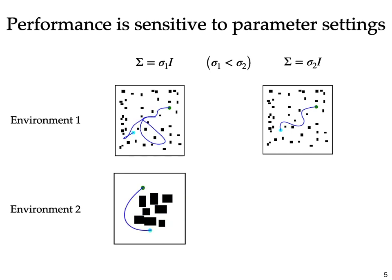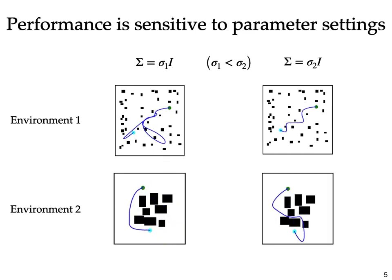But what happens if the obstacle distribution changes as in environment 2, where the obstacles are clustered around the center of the workspace? Here a smaller sigma is able to make large steps and warp the straight-line trajectory to one side of the obstacle pit, whereas a larger sigma simply gets stuck in a local minimum.